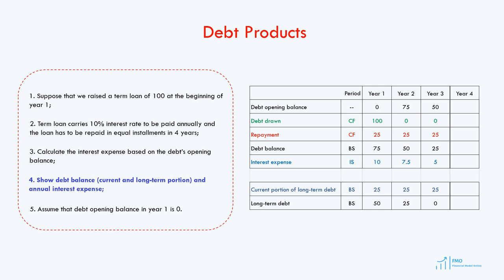We start year 4 with a debt opening balance of 25. Debt drawn is 0 and debt repayment is 25, so in year 4 we fully repay the outstanding debt, and the debt balance is 0 at the end of year 4. The interest expense is 10% times 25, giving us 2.5. Both the current and long-term debt will be 0 because we have now fully repaid the outstanding debt. We will continue with debt accounting in the next part of the course, where we will cover advanced accounting topics.